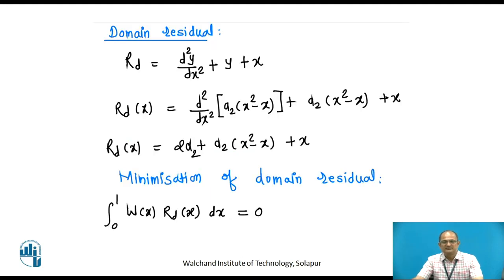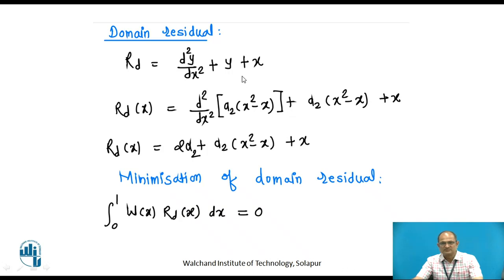Once we have the weighting function, we find the domain residual. The domain residual is the left-hand side of the differential equation: R_d(x) = d²y/dx² + y + x. Substituting y = a2·(x² − x) from equation 2 and taking the second derivative, we get R_d(x) = 2a2 + a2·(x² − x) + x.